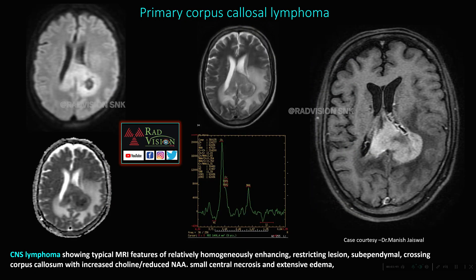CNS lymphomas are close differentials for glioblastoma multiforme. Here there is a hyperintense lesion in the splenium of corpus callosum with pericallosal extension, showing restricted diffusion on DWI with low ADC values, iso to hypointense on T2-weighted imaging, and intense homogeneous enhancement after contrast with only few areas of necrosis. This is primary corpus callosal lymphoma in an immunocompetent patient, with elevated choline peak and reduced NAA. It typically shows subependymal spread and restricted diffusion with low ADC values.